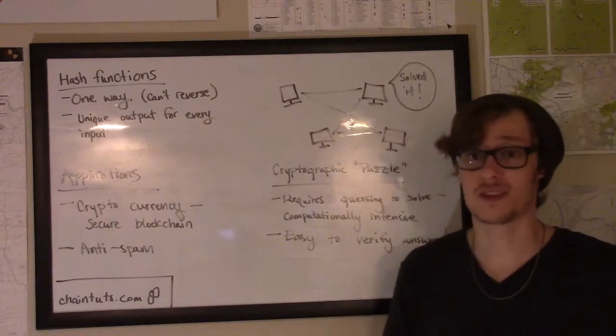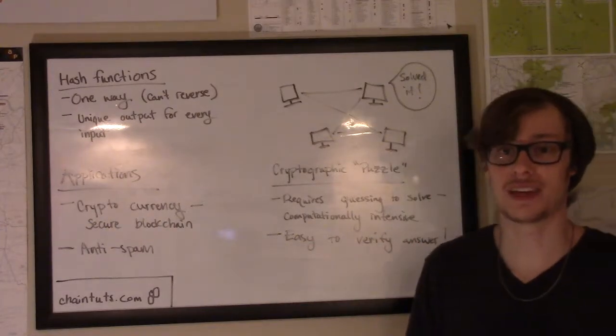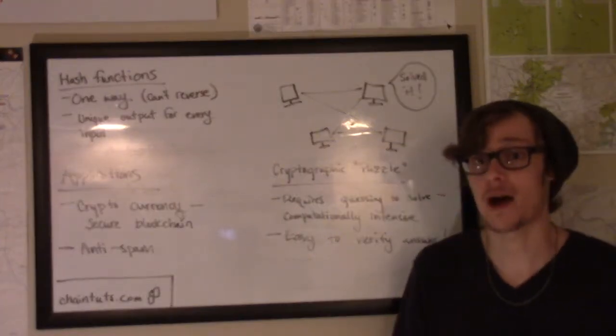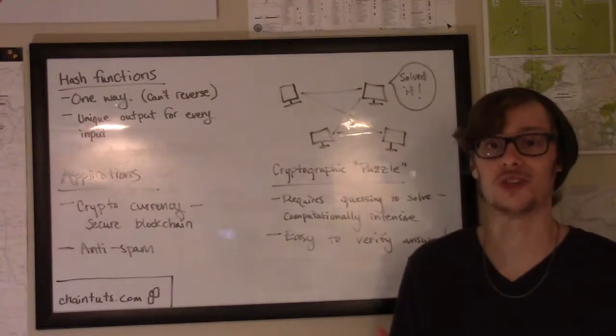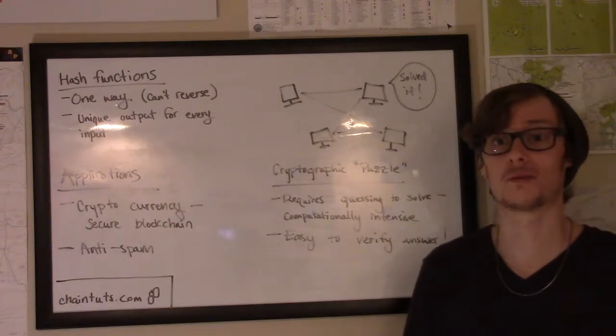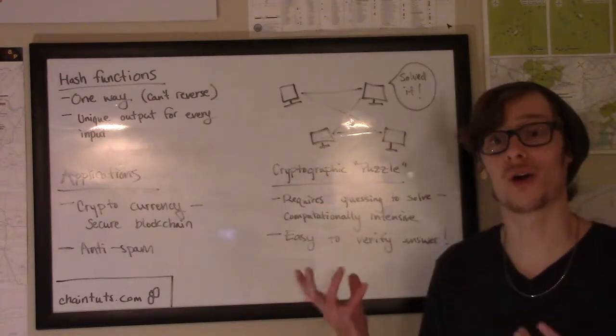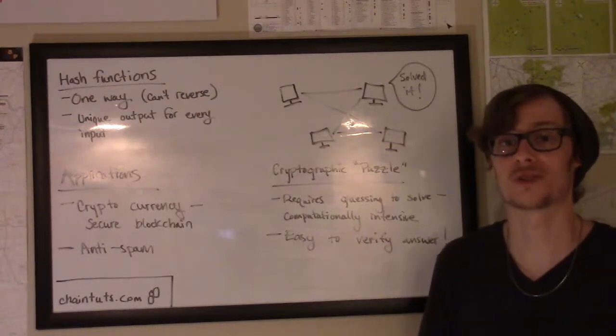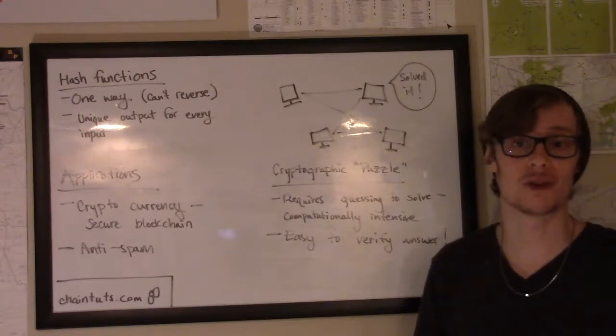Now obviously its most wide use is in cryptocurrencies. And so it's kind of interesting to see how this evolved from something that was used in anti-spam on one computer to an entire network across the entire world trying to solve these problems in order to secure something without the need for a third party.